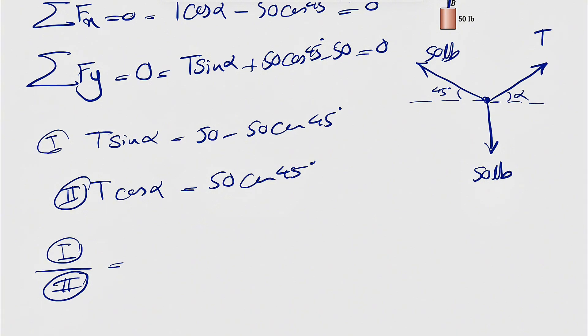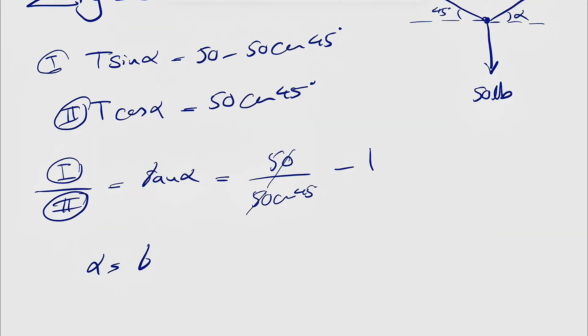And if we just divide equation one by the second equation, the T will be cancelled out, we're going to have sine over cosine, which will be the tangent of alpha. And on the right side, we're going to have 50 over 50 cosine of 45 degrees and cancel out 50s and minus one. So the alpha in here would be basically the tangent inverse of 1 over cosine of 45 degrees minus 1.